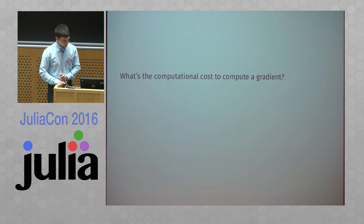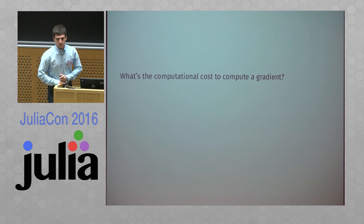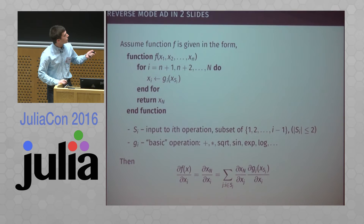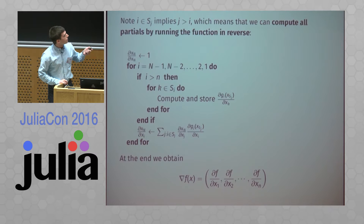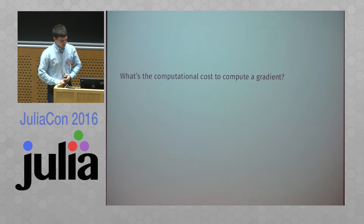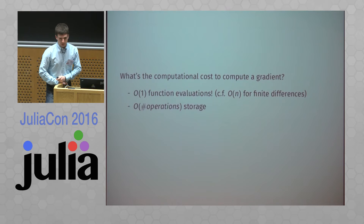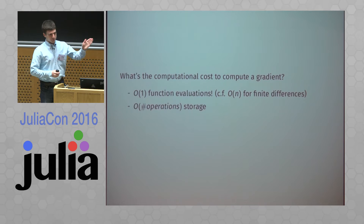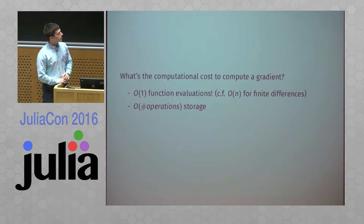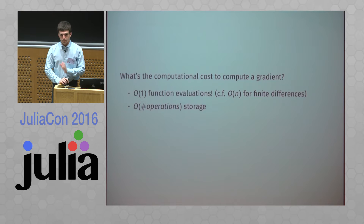The really cool thing about reverse mode is that it's very efficient. All we've done is run our function forward to get intermediate values, then run it in reverse once to compute all the partials. That's essentially a constant number of function evaluations — O(1) — maybe a small factor times the cost of evaluating the function itself. Compare that with finite differencing, where you have to take a perturbation in all possible dimensions, evaluating your function at least n times — maybe 2n times — where n is the input dimension. So this is a much more efficient way to compute gradients.